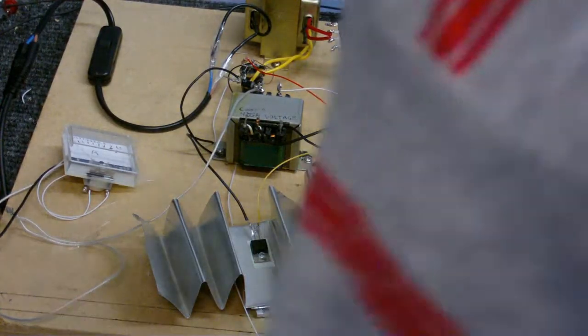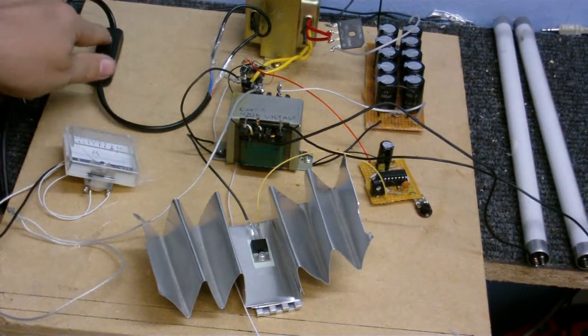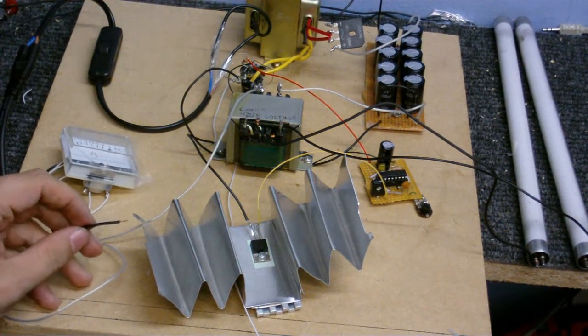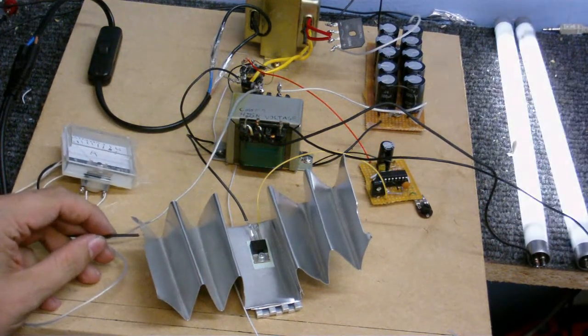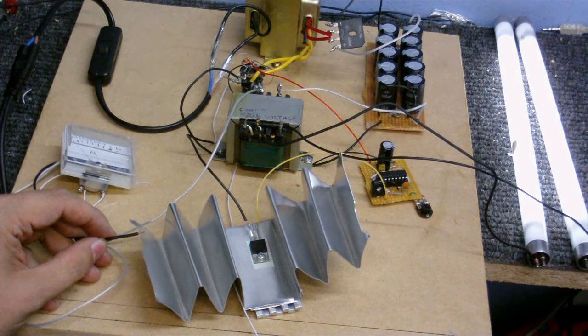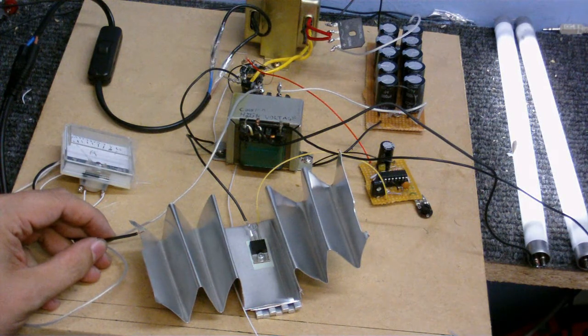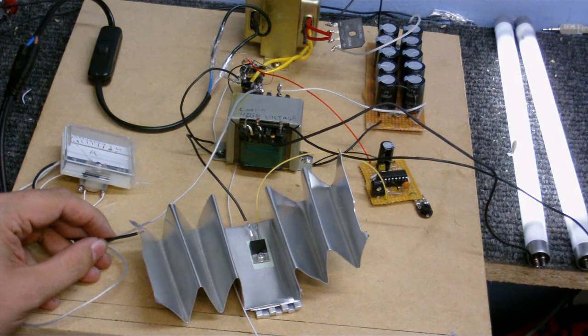I have the tubes connected now. I'm going to get out of the way, so you can see what's going on. Turn the power back on. Connect up the drain. And yes, we have light. It's not very bright, but it is working. Might have to readjust the oscillator.